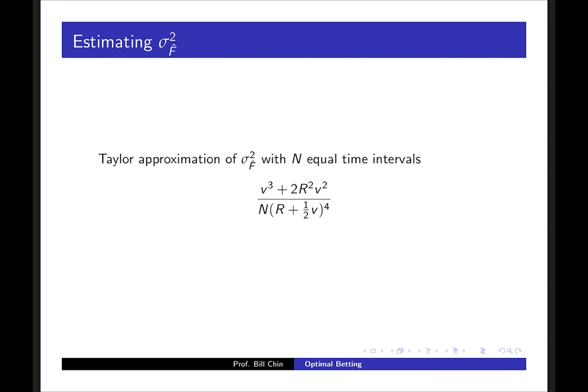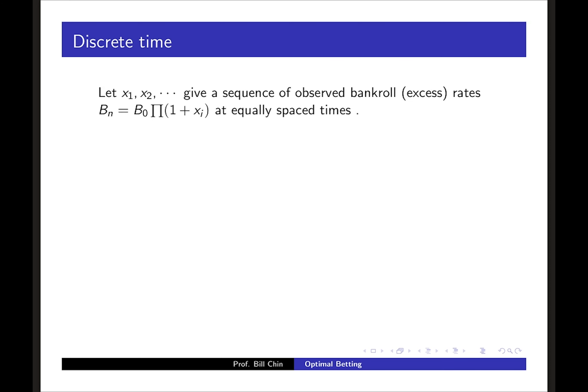In discrete time, what if you have a sequence of bankroll growth rates or excess rates? Then the bankroll at time n is the original bankroll times the product of (1 + ξᵢ) as i goes from 1 to n. Notice this is an extremely general setup as opposed to the continuous time geometric Brownian motion model we had before. Here x₁, x₂, etc. are the computed bankroll growth rates over equally spaced times.